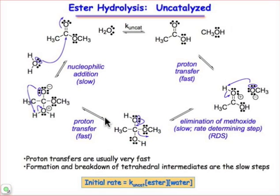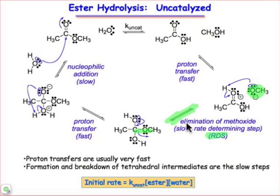The next step is a very slow step compared to those first two. It's a beta elimination, and it involves the loss of that carbon-oxygen bond to kick out the leaving group, methoxide, and make this protonated ketone. That's the rate determining step, and that's the step we're going to use to write the rate expression. The last step involves the proton transfer to make the neutral molecule of methanol and the carboxylic acid.